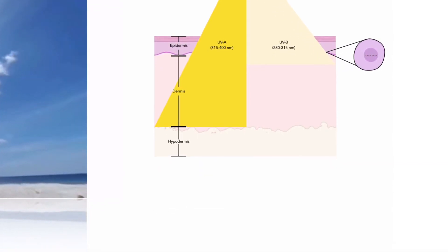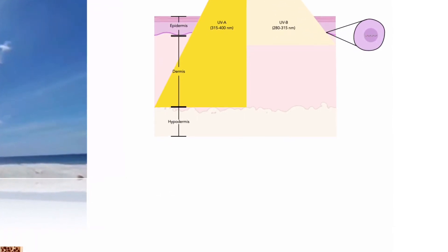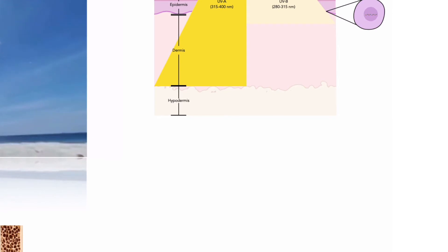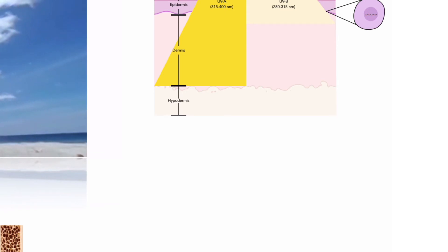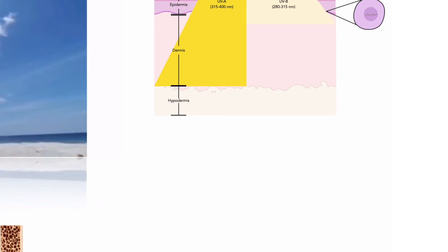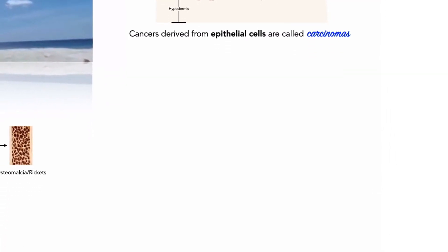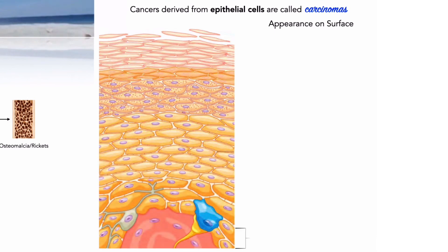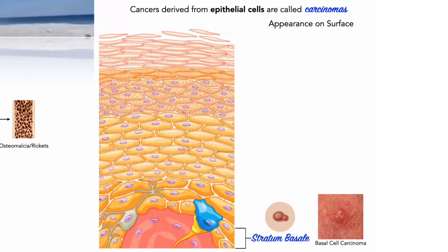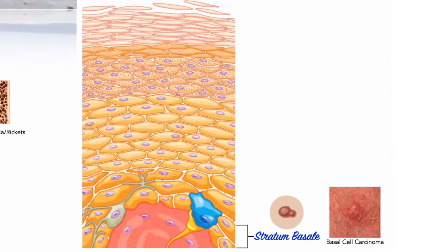Almost everyone has several benign tumors of the skin; moles and warts are common examples. Skin cancers, however, are more dangerous, and skin cancers are the most common form of cancer. Any cancer of epithelial tissue is called a carcinoma. The most common skin cancer is basal cell carcinoma, which often looks like a waxy bump.